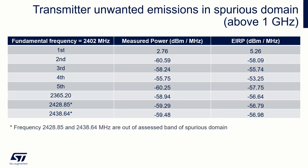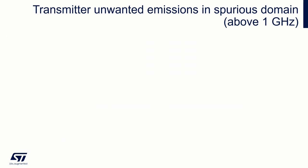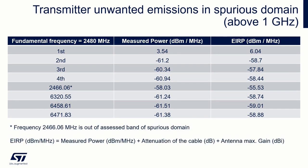We assess only frequencies in the spurious domain — meaning below 2396 MHz and above 2487.5 MHz. Products marked with stars are not our concern. Similarly, we can do the same evaluation on transmitter products for the high channel. There are no surprises and nothing exceeds the limit.